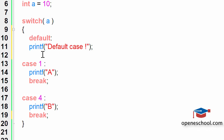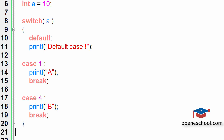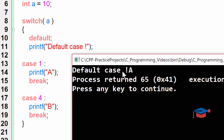Because we have not written the break statement for the default case, after the execution of that line of code, the control will move into case number one and that line will also get executed. This is because we are not indicating to the default case that after executing its line, it should stop and go out of the switch statement body. Let's run this code and see the output.